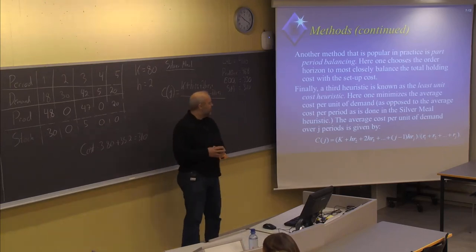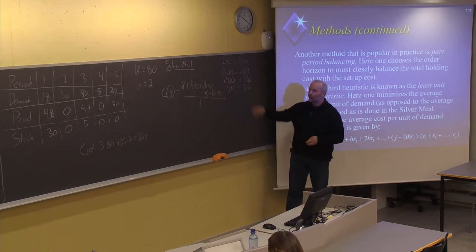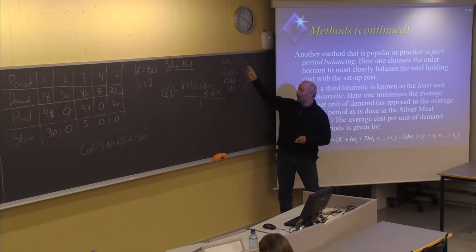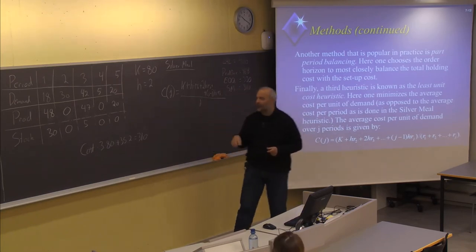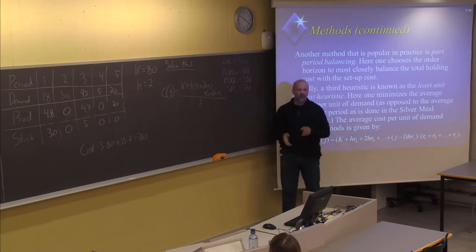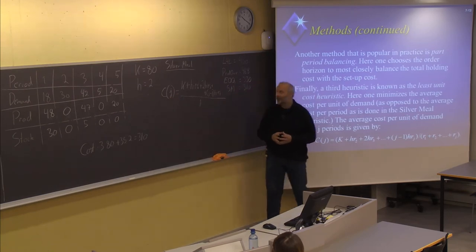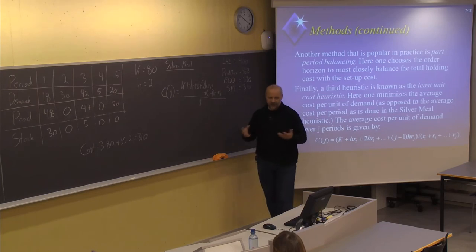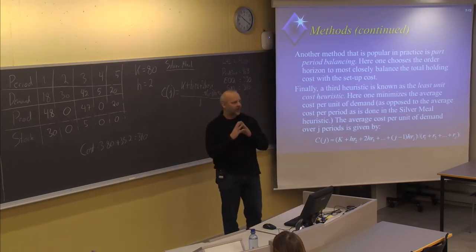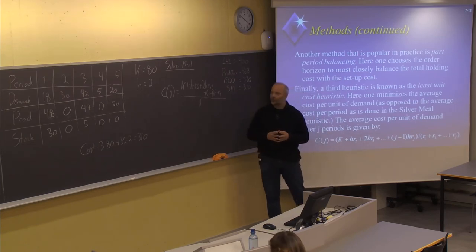We have now seen different methods to solve lot sizing problems. We first looked at the two extreme methods: lot-for-lot, which means produce exactly what you need in each period, and produce-once, which means producing everything in the first period and then storing until the period you actually need the inventory. We also tried to adjust the EOQ model and use the EOQ size for a corresponding fixed demand problem to decide which period to set up production.